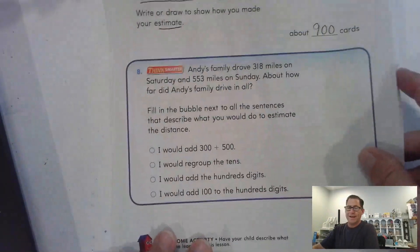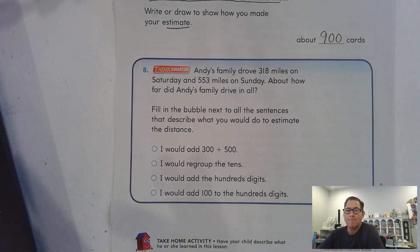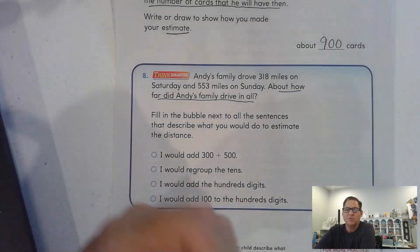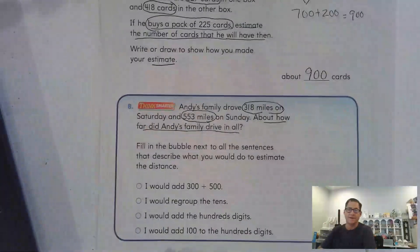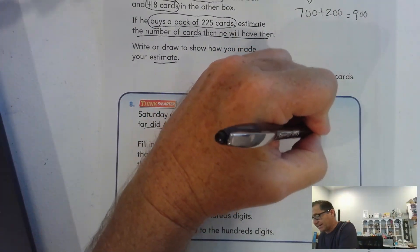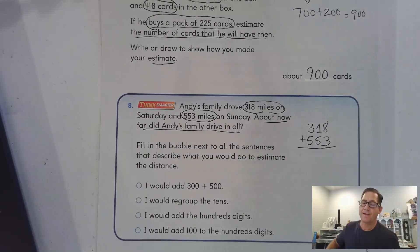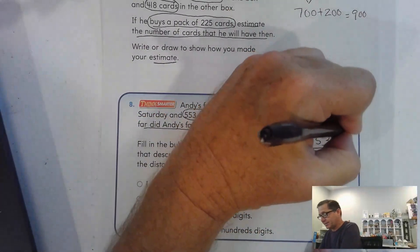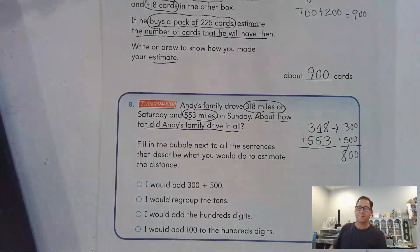Number 8. Andy's family drove 318 miles on Saturday and 553 miles on Sunday. About. How far did Andy's family drive in all? About. So, whenever we have a word problem that says about, we don't want an exact answer. We just want something that's close. So, they drove 318 on Saturday and 553 on Sunday. So, we're going to be adding 318 plus 553. But, because it said about how far, we're just going to focus on the hundreds digit. So, 300 plus 500. So, they drove about 800 miles.